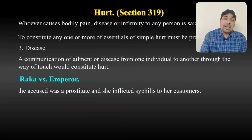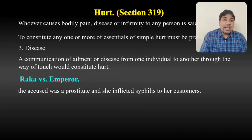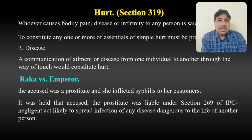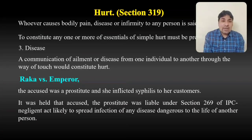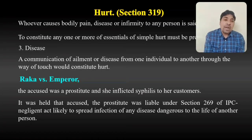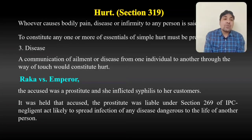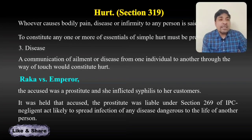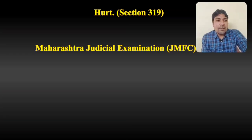In the case of Raka versus Emperor, the accused was a prostitute who inflicted syphilis on her customer. It was held that the accused prostitute was liable under section 269 of IPC — negligent act likely to spread infection of any disease dangerous to the life of another person.